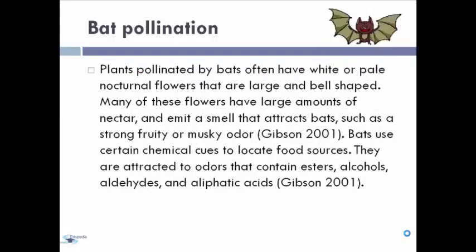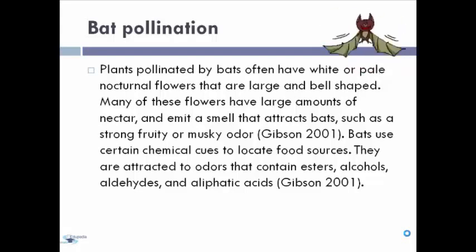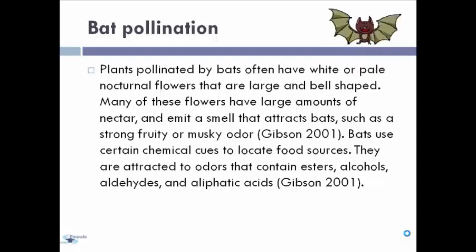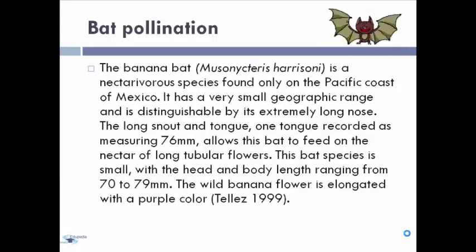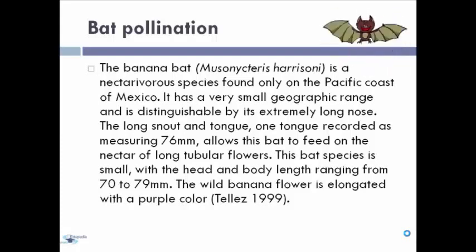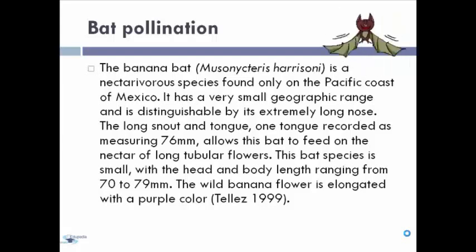Plants pollinated by bats often have white or pale nocturnal flowers that are large and bell-shaped. Many of these flowers have a large amount of nectar and emit a smell that attracts bats, such as strong, fruity, or musky odors. Bats use chemical cues to locate food sources and are attracted to odors containing esters, alcohols, aldehydes, and aliphatic acids. The banana bat is a nectar-feeding species found only on the Pacific coast of Mexico, distinguishable by its extremely long nose. Its tongue, recorded as measuring 76 mm, allows it to feed on the nectar of long tubular flowers. This bat species is small, with a head and body length ranging from 70 to 79 mm. The wild banana flower is elongated with a purple color.